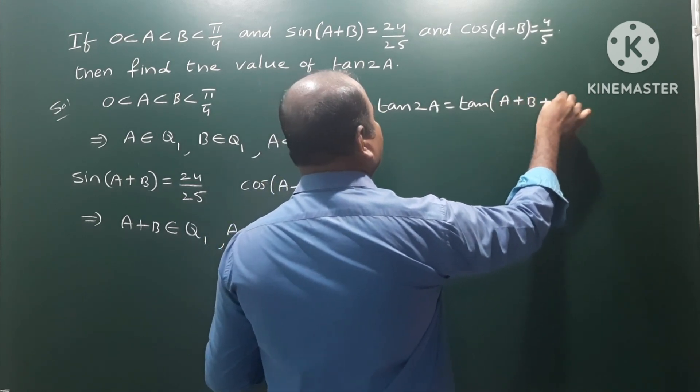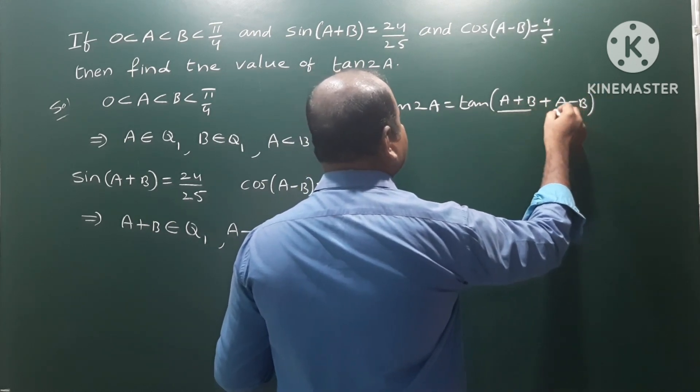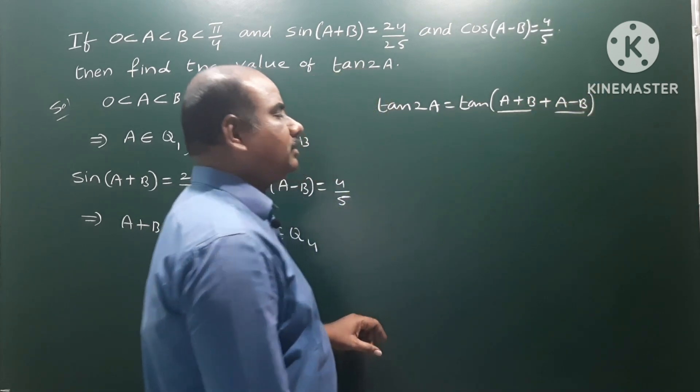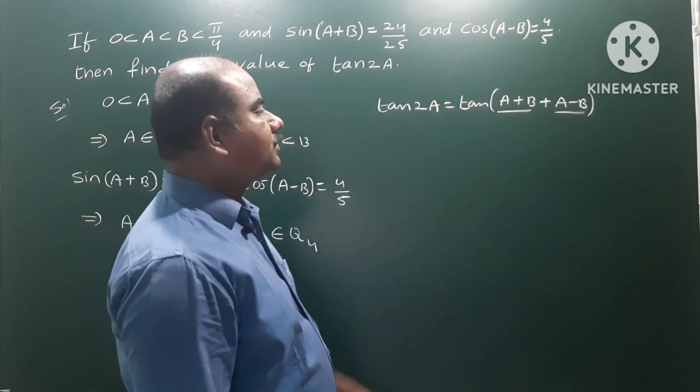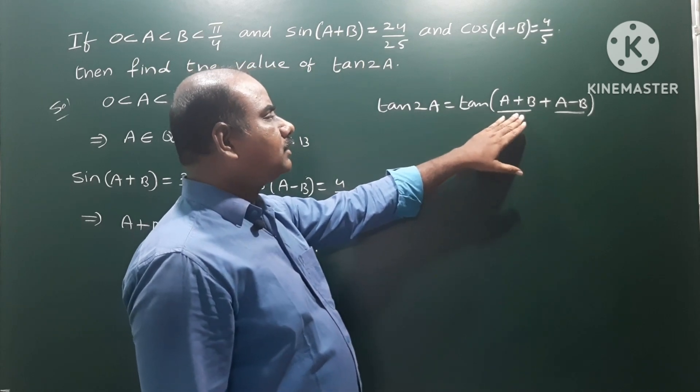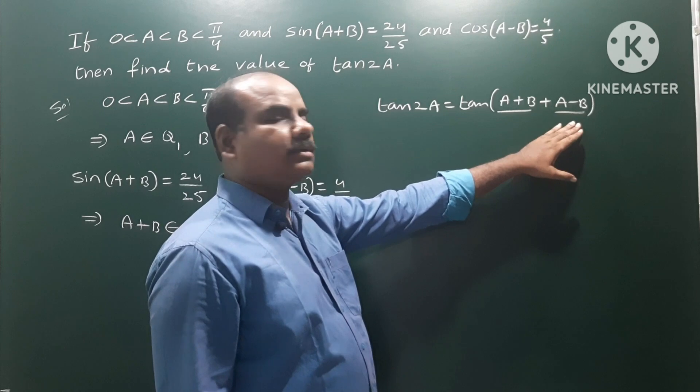So to calculate tan 2A, we have already discussed that 2A = (A+B) + (A-B). So 2A is equal to A+B plus A-B, where B cancels. Therefore, 2A equals this.